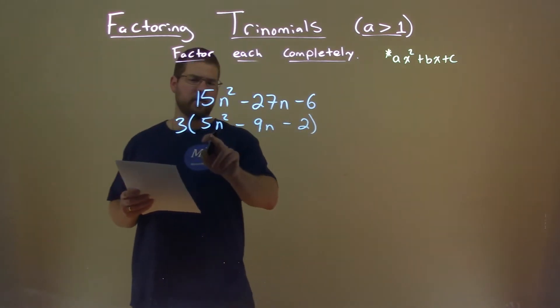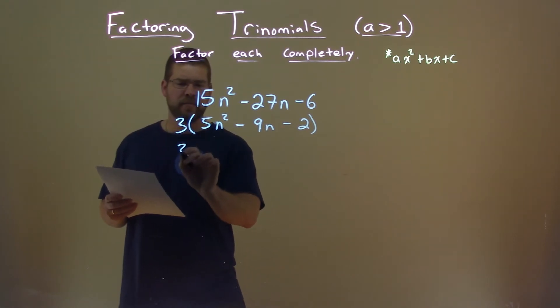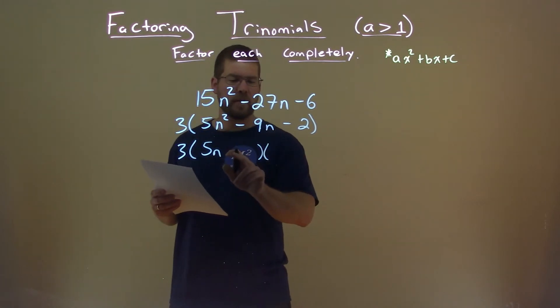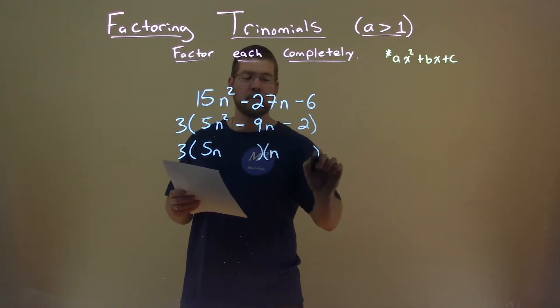We look at this and we say, 5 is a prime number. That's our a value. So we know this is going to be in some form of 5n times, or plus or minus something else, times n plus or minus something else.